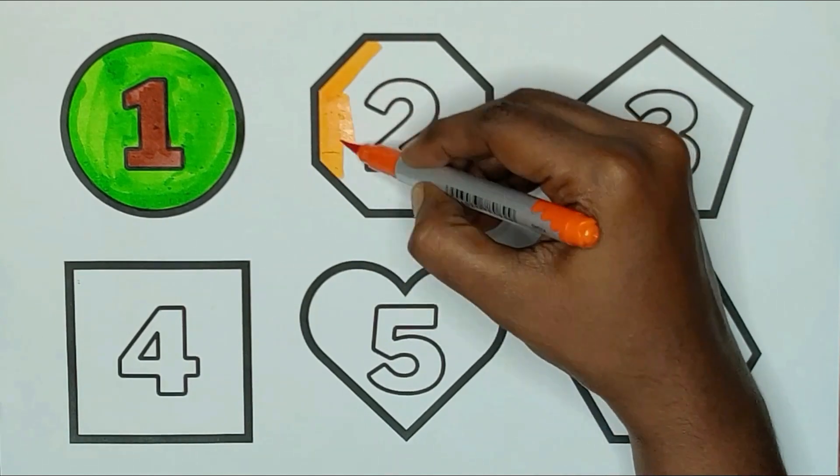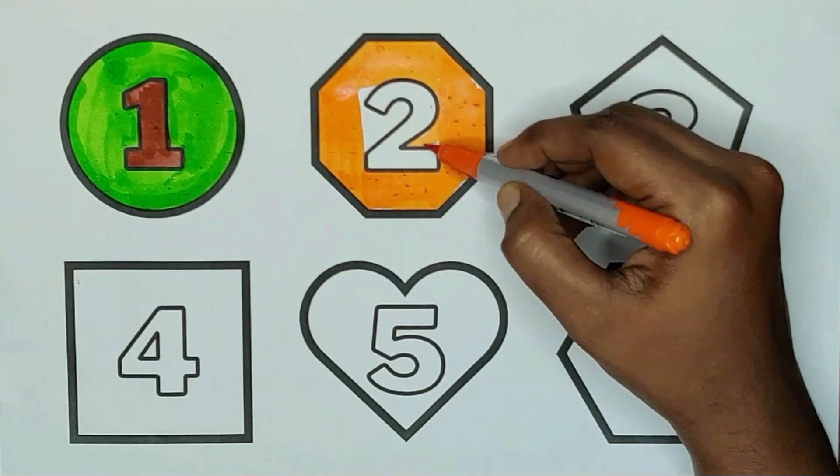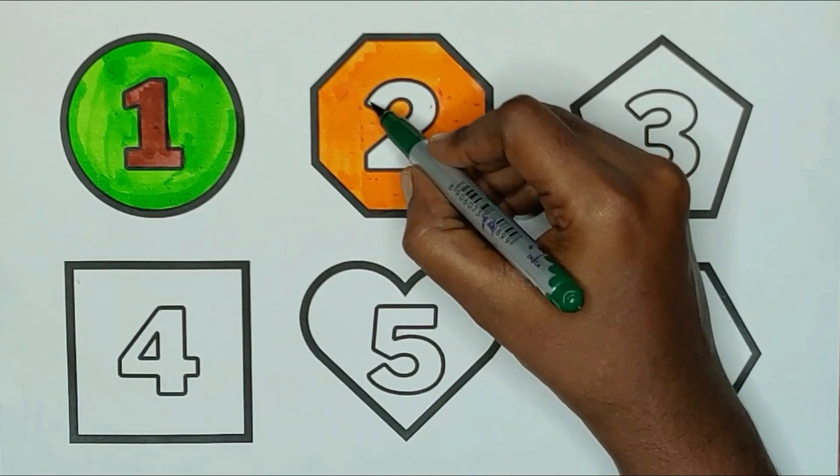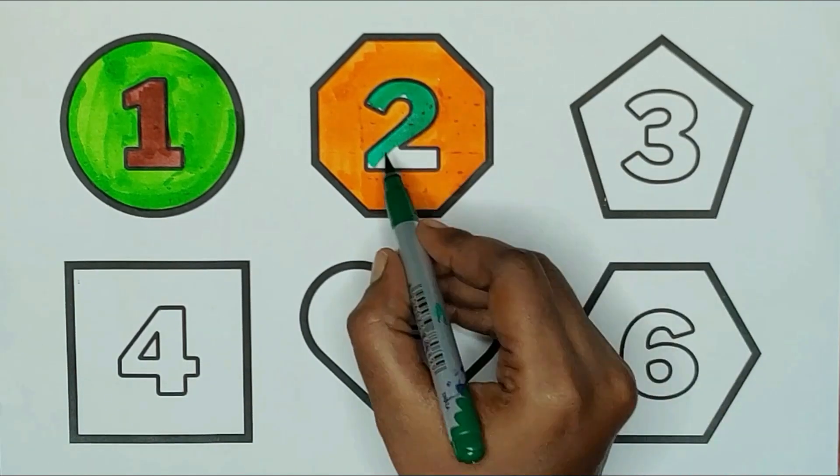Orange color octagon. The shape is octagon. Green color, two. T, W, O, two.